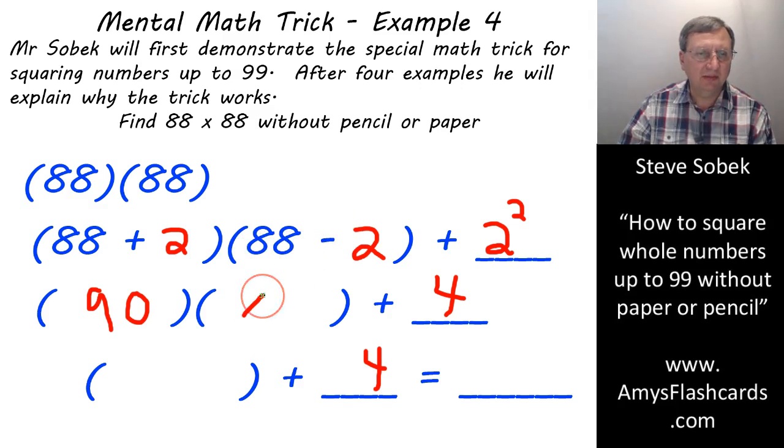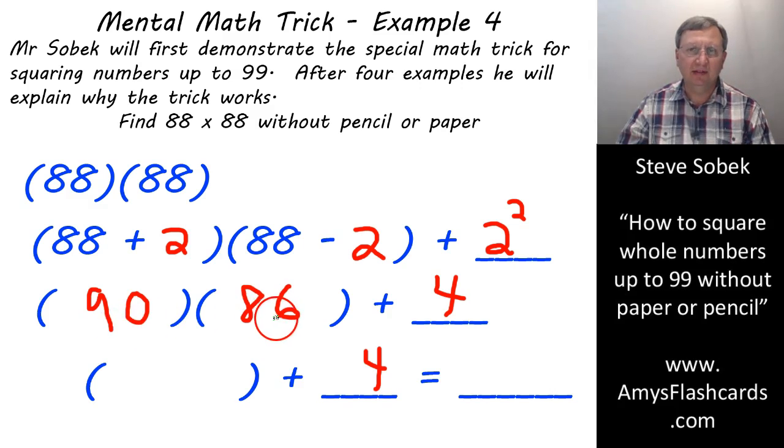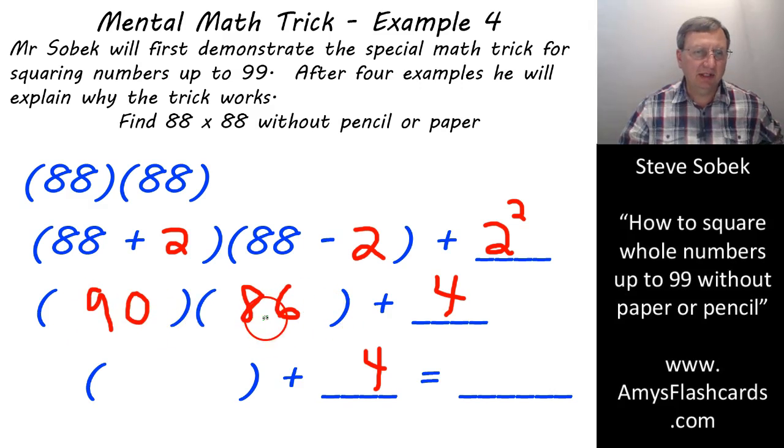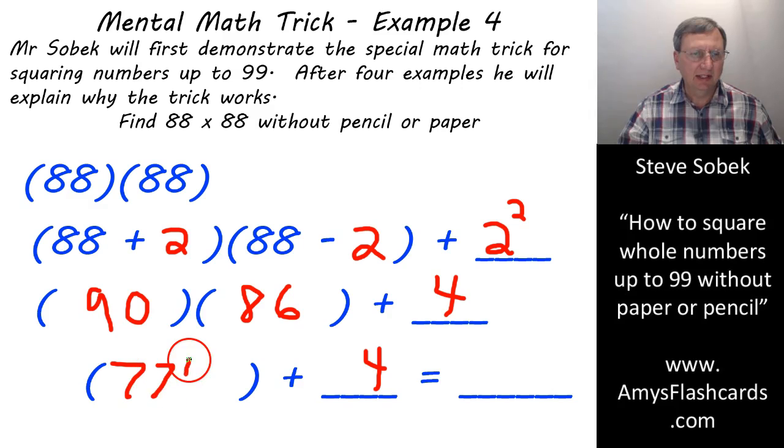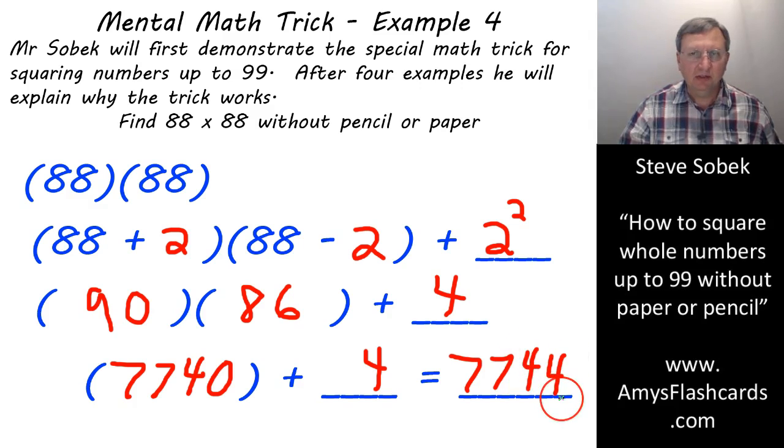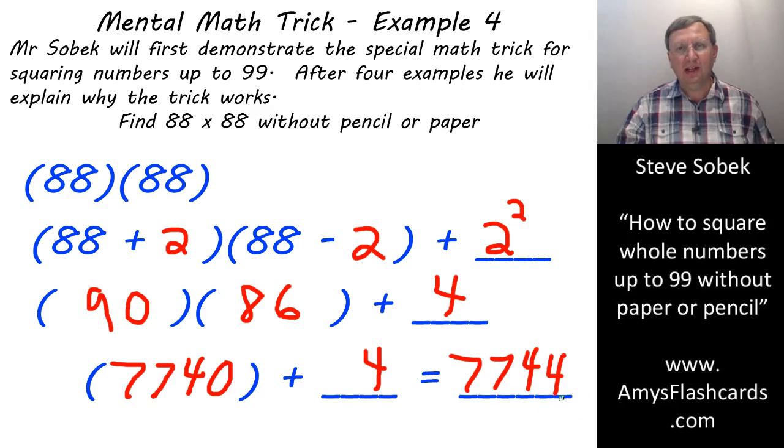And that's not too bad. 88 minus 2 would give me 86, and we'd have to calculate 90 times 86 in our head. First, multiply by 9 and then multiply by the 10. 9 times 80 is 720, plus another 54 is 774. Then, times it by the 10, and that gives you 7740. And then add the 4 to that, giving us 7,744. That's not too bad, but it's not what I would have done.